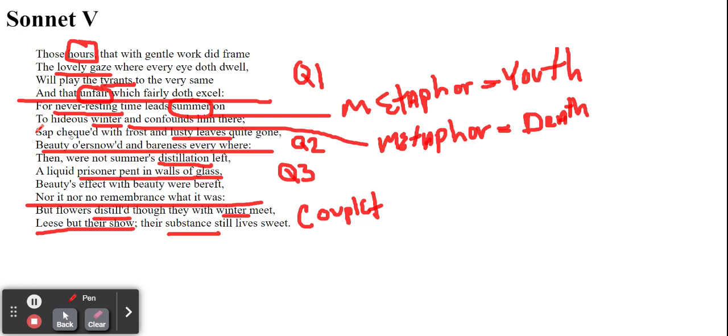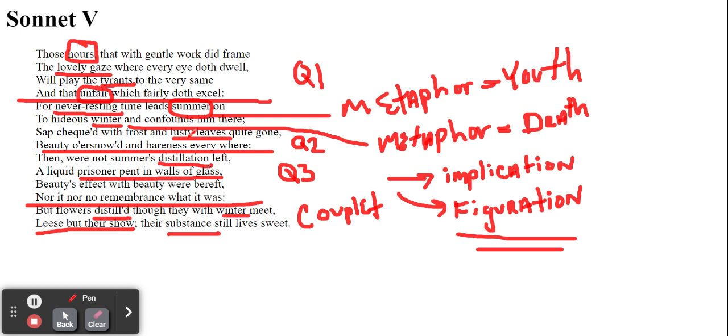So here, by implication, and here we have figuration. Figuration is the use of figurative language. We have this notion of this distillation. The speaker is implying that the only way that the beauty will live on of the addressee is through procreation and through having a child.